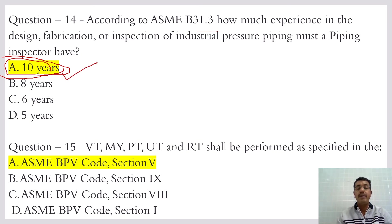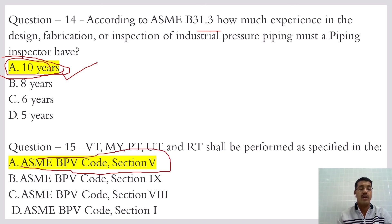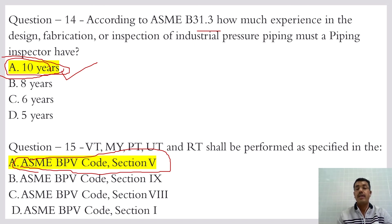VT, MT, PT, UT, and RT shall be performed as specified in ASME Boiler and Pressure Vessel Code Section 5. In ASME Section 5 you can read about VT, MT, PT, UT, and RT in detail.